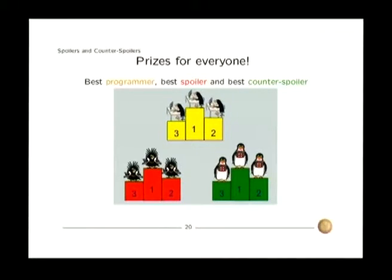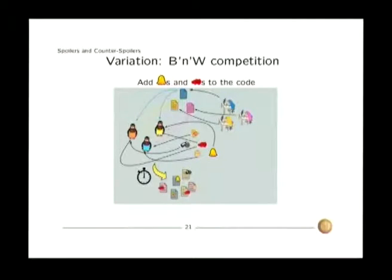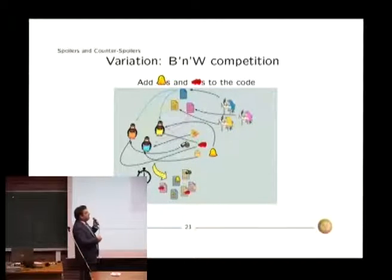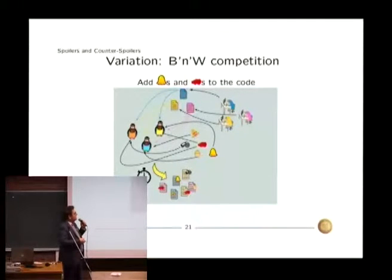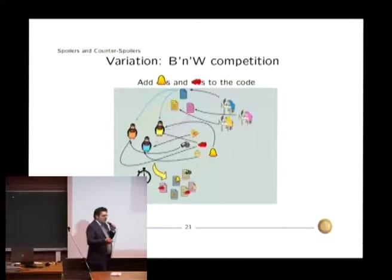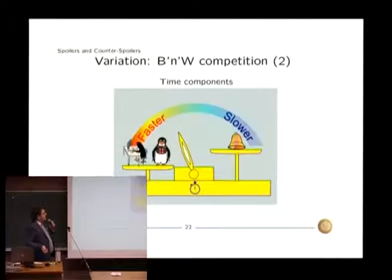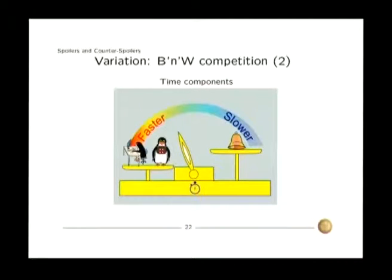This approach is about code robustness and ease to debug stuff like that. But if you want for example to reward ease of changing the code you can do something similar. This is the bell and whistle competition. You have the programmers that write the code. The code is given to, let's still call them counter-spoilers for commodity. To those counter-spoilers we say, oh add this new feature to the code, and you measure the amount of time required to add the feature. And still the amount of time is a function of how well was written the code, how good the counter-spoiler is, and how difficult it is to add the new feature. And basically the idea is the same.